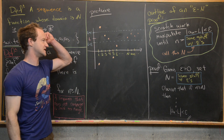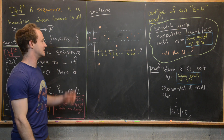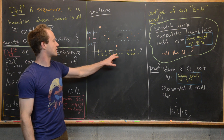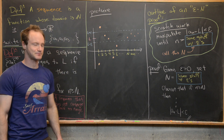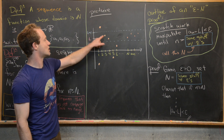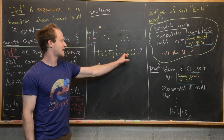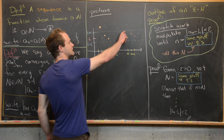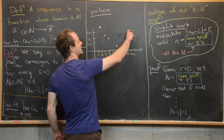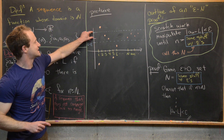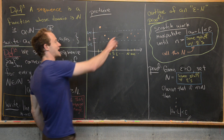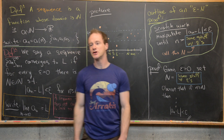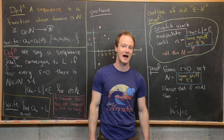Let's look at a graphical representation of the L, epsilon, and N setup. I've put the limit L here and laid out positions 1, 2, 3, 4, 5, 6, then N and N+1. The sequence can jump around as much as it wants until it hits N, but at the point where we hit capital N, all values of the sequence after that have to be within a band of distance epsilon from the limit L. This band gets smaller and smaller the further you go out.